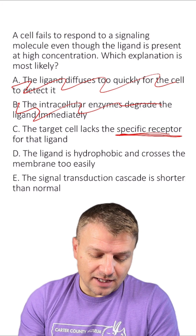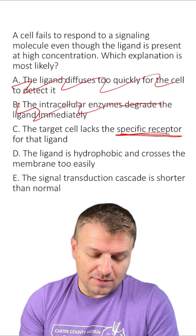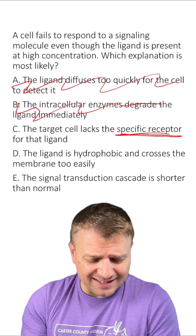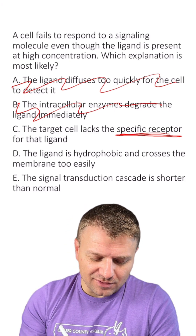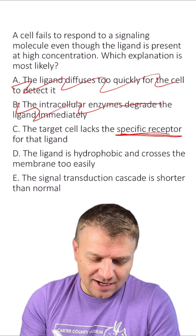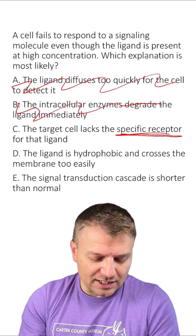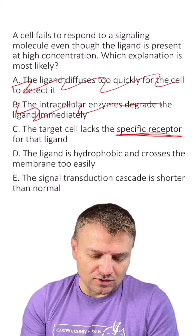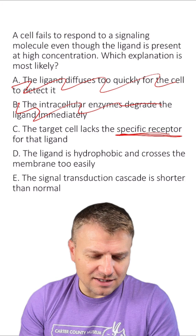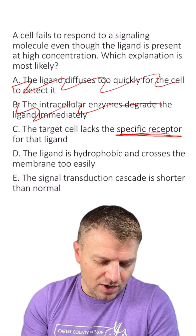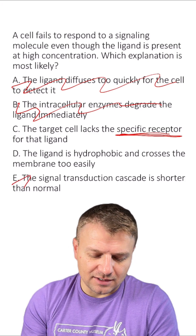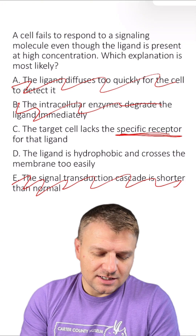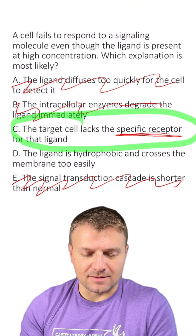Answer D: the ligand is hydrophobic and crosses the membrane too easily. That could happen, but I don't like that as an answer — C is the better answer. Answer E: the signal transduction cascade is shorter than normal. That has nothing to do with whether or not a cell responds to a signaling molecule. So out of all these answers, C is the much better choice here.